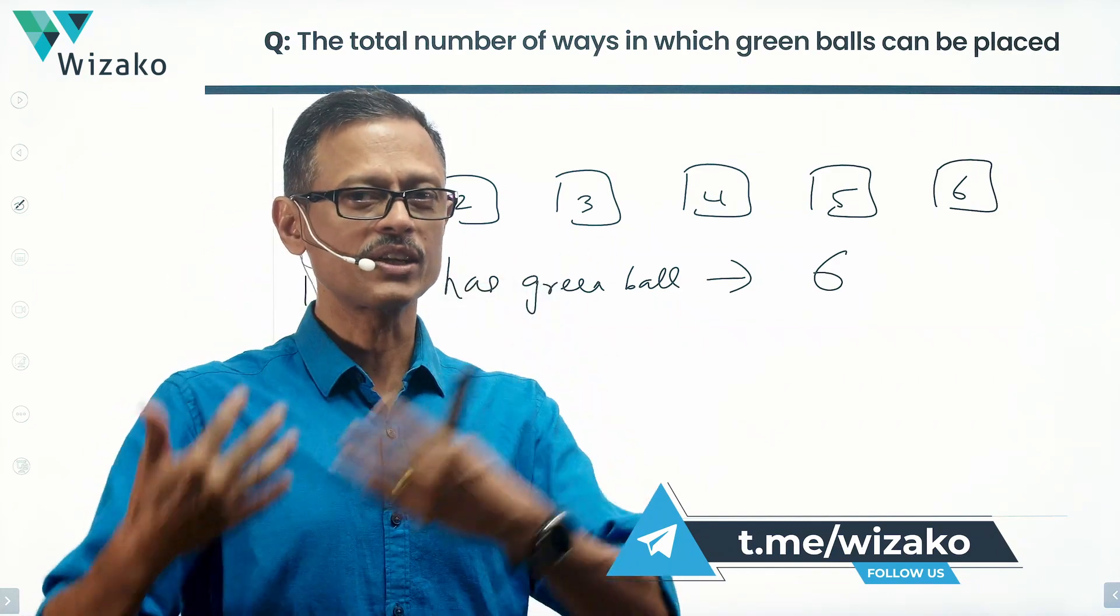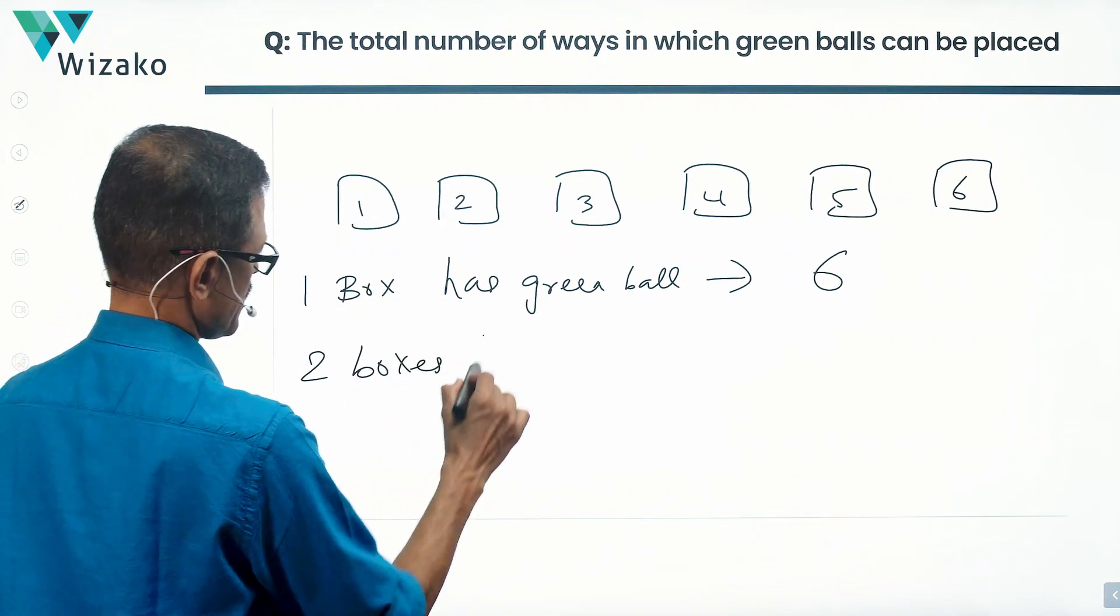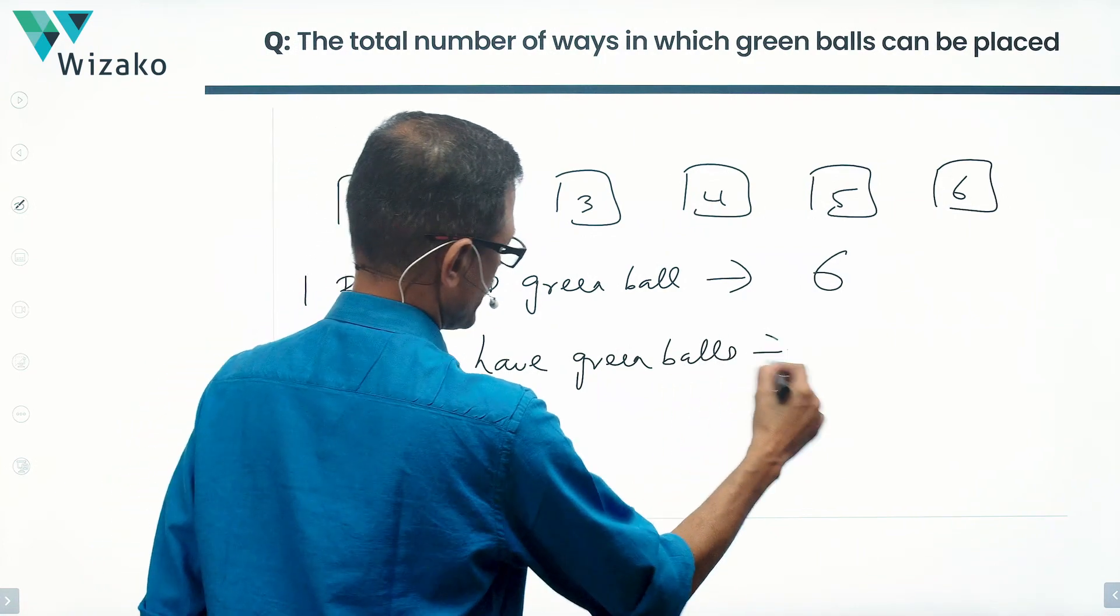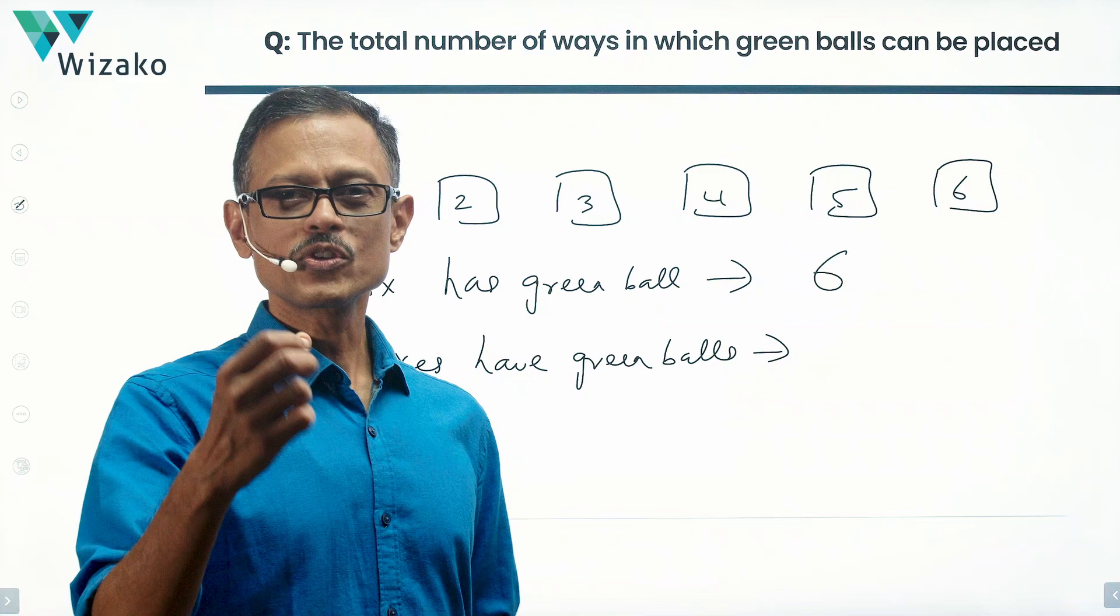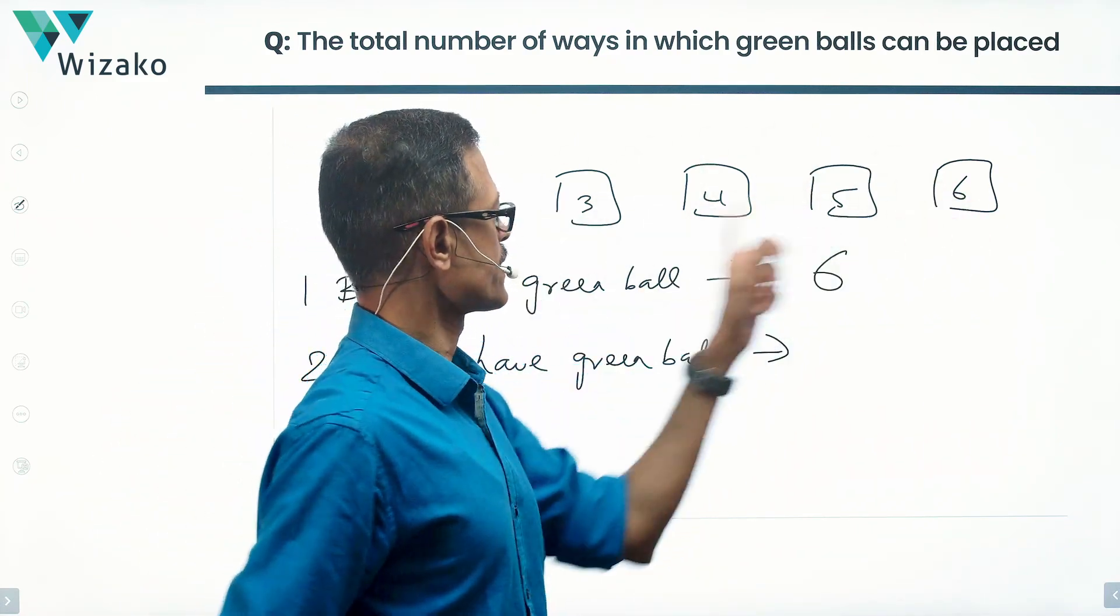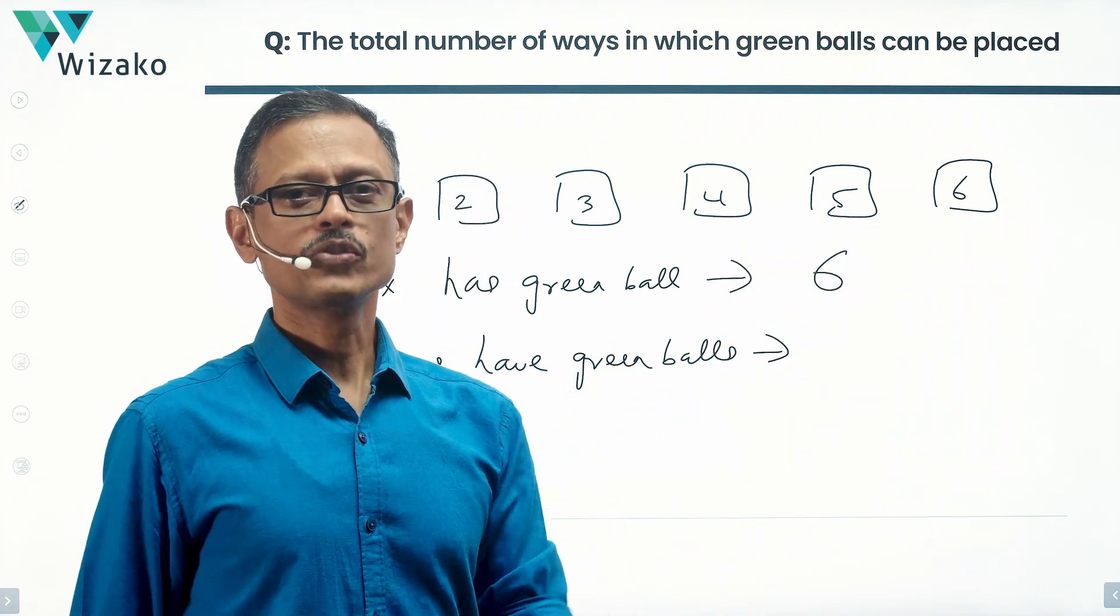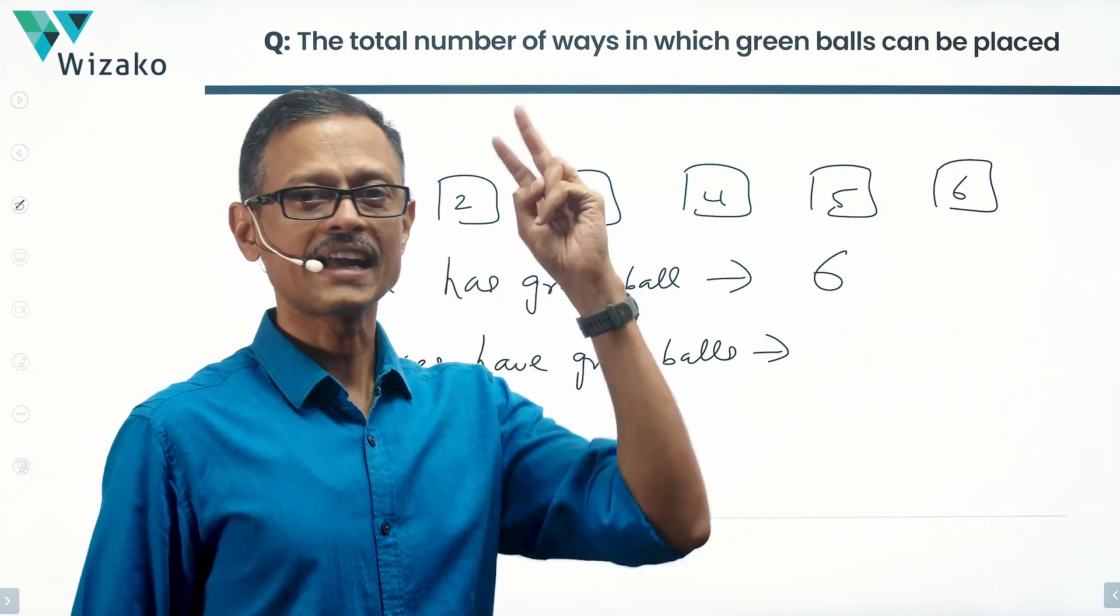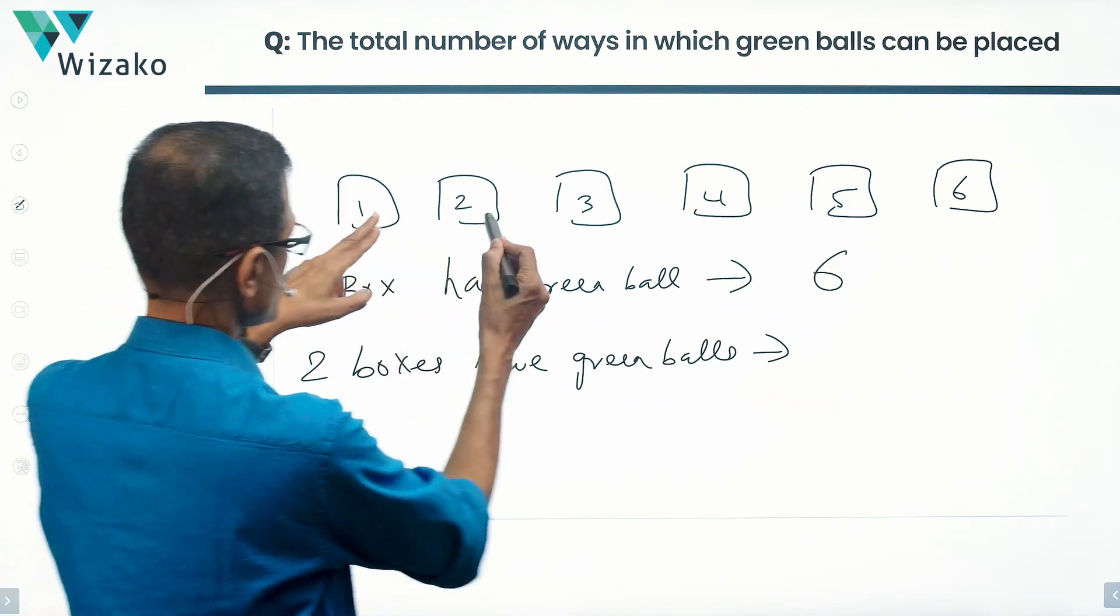We have no other option but to list it down and get it. So 2 boxes contain, 2 boxes have green balls. This is a little more interesting. You can't say that I'm going to do a 6C2. 6C2 is picking any two boxes out of 6. So it could be the first and the fifth box. It could be the second and the sixth box. Those all will not meet our criteria. So if you're trying to do a 6C2, 6C2 is incorrect here because that picks randomly any two out of the six. We want two consecutive ones to appear.